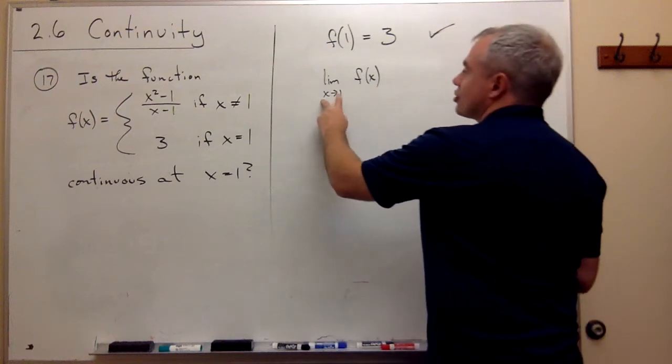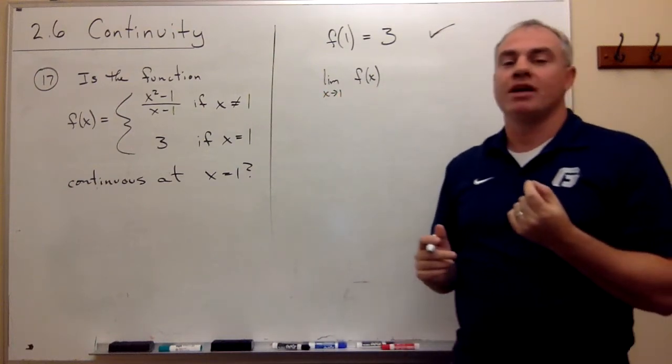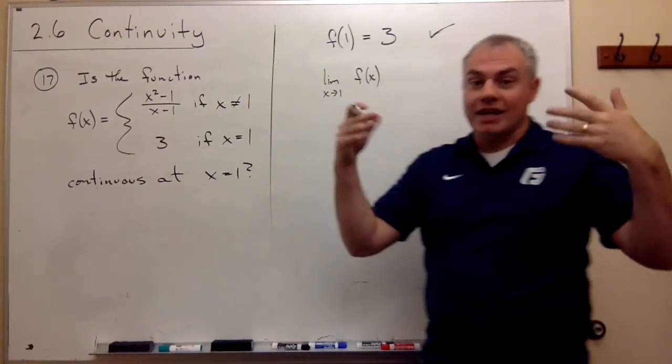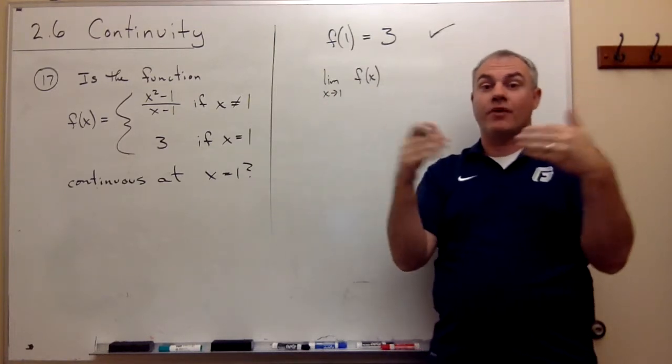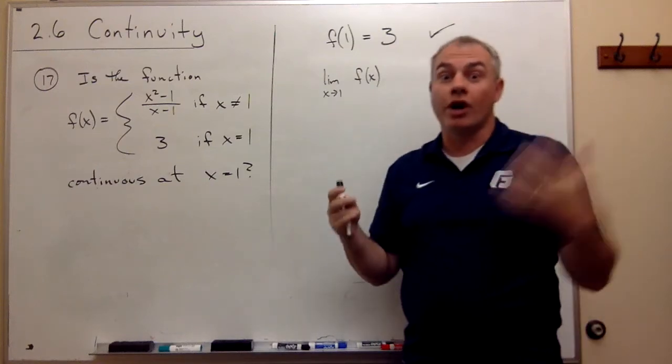Well, as x goes to 1, and this is kind of the key point of this problem, as x goes to 1, we're getting close to 1 from both sides. But if we're getting close to 1 from both sides, we're not at 1.